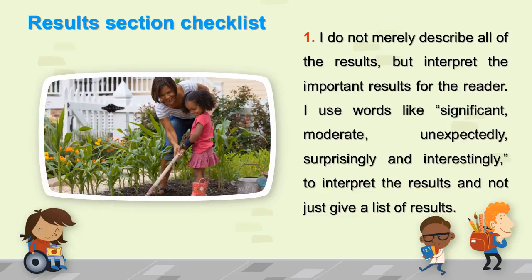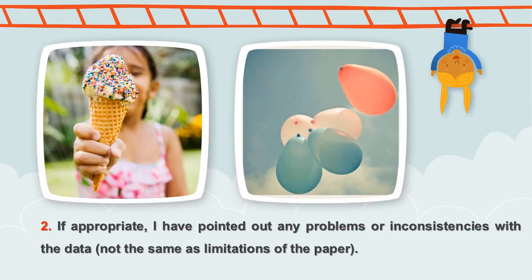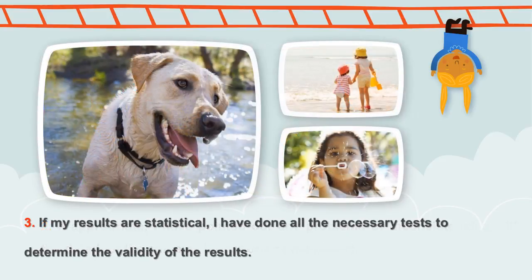I use words like significant, moderate, unexpectedly, surprisingly, and interestingly to interpret the results, and not just give a list of results. Two: If appropriate, I have pointed out any problems or inconsistencies with the data — not the same as limitations of the paper.